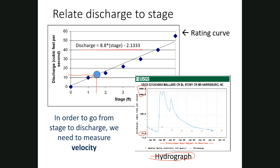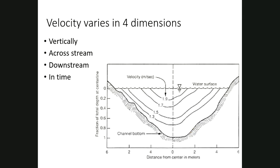We can measure stage fairly easily and automate it. But then we need to develop a rating curve, and the key thing requiring hydrologic technicians to go into the field is getting velocity measurements. Why is this so hard? Why don't we have automated technology for velocity the way we do for stage? Here's the problem: velocity isn't just one number in the stream — it is variable all over the place.